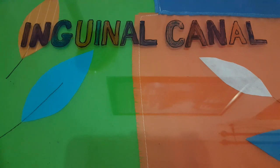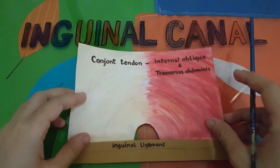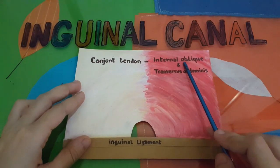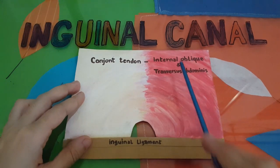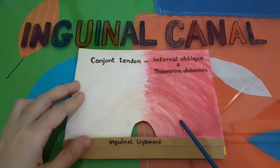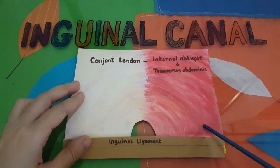To understand the inguinal canal we should first know the layers of the abdominal wall in the inguinal region. I have made all the layers here. The innermost layer is the fascia transversalis, which is the fascia of the transversus abdominis muscle. Outer to it is the layer of transversus abdominis muscle and internal oblique, whose fibers originate from the inguinal ligament laterally — the origin of internal oblique being more medial. So in this small portion only the internal oblique is present, while laterally both transversus abdominis and internal oblique are present.